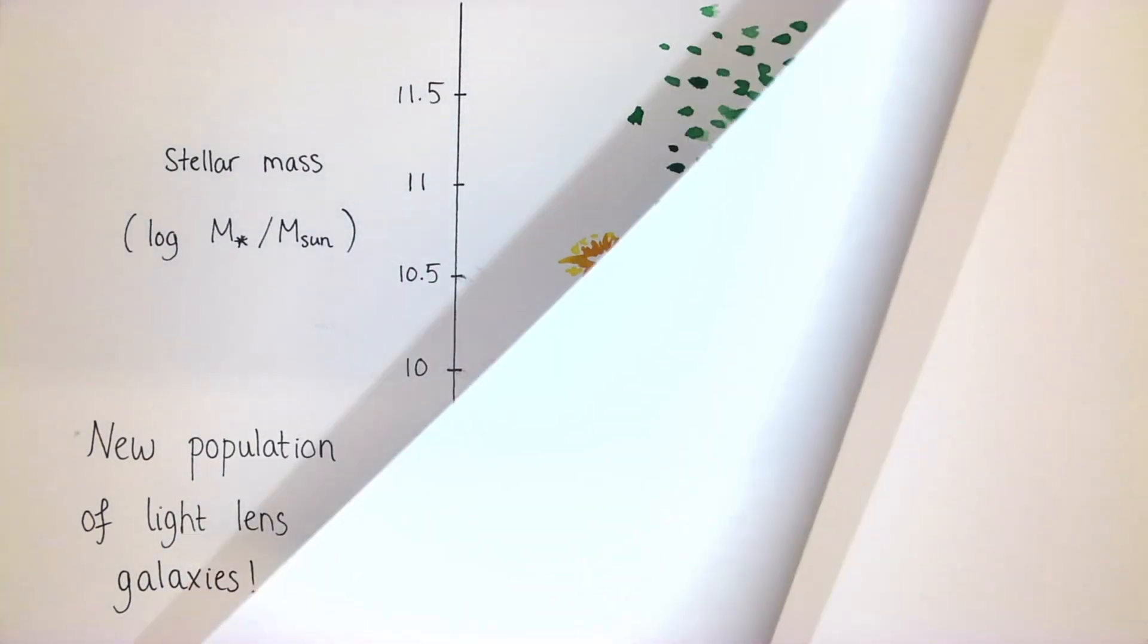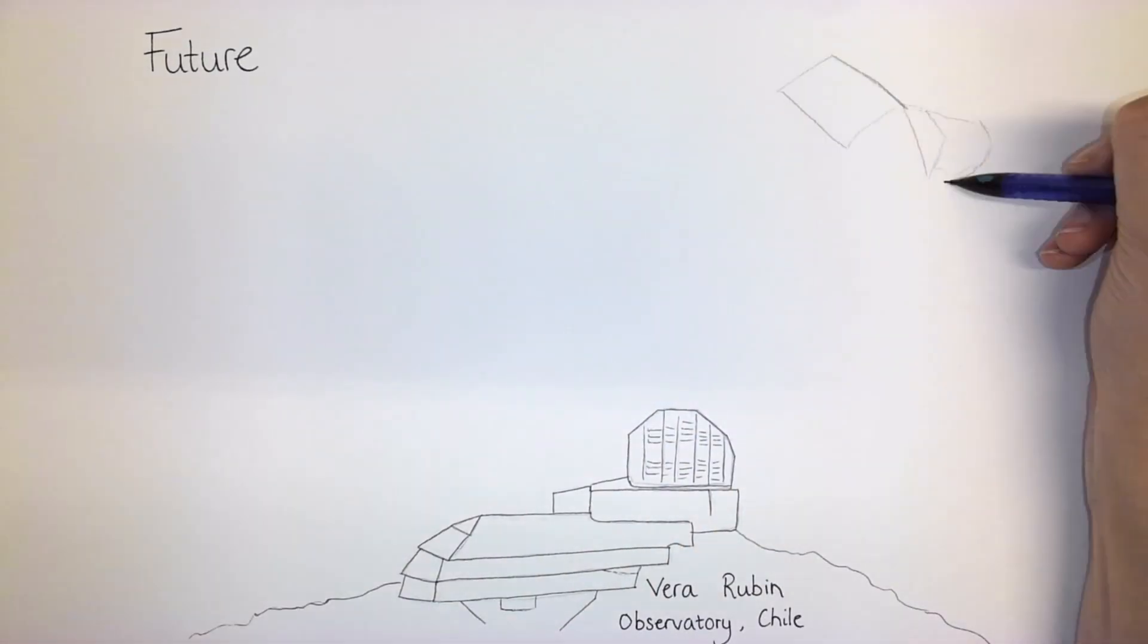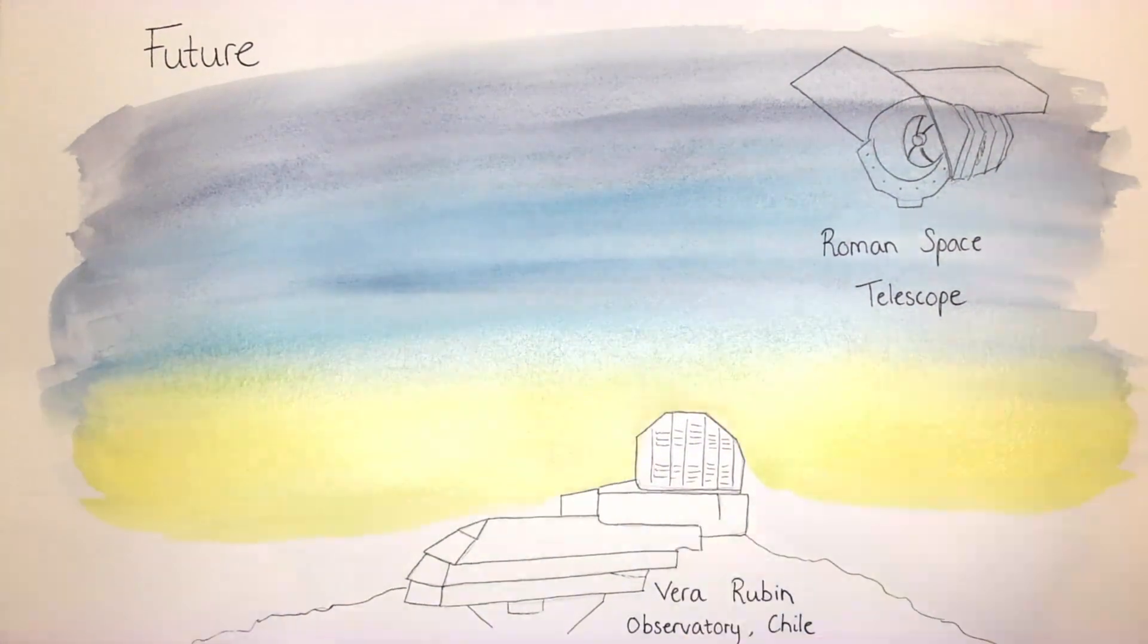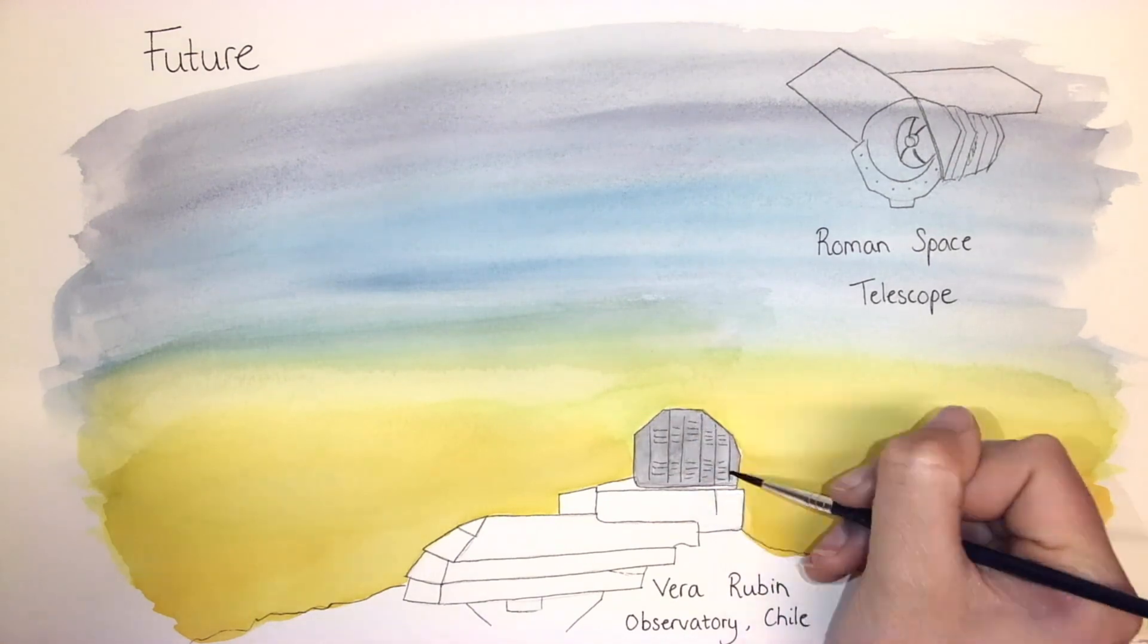So what's next? With the advance of the next generation of telescopes, like the Vera Rubin Observatory in Chile and the Nancy Grace Roman Space Telescope, we anticipate discovering hundreds more of these rare gravitationally lensed supernovae.